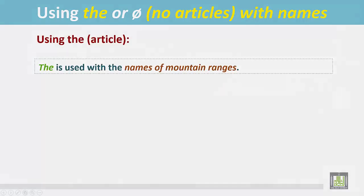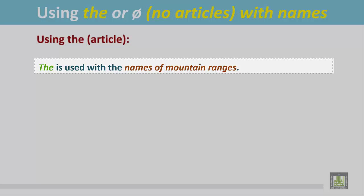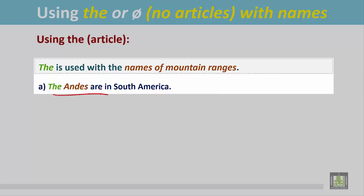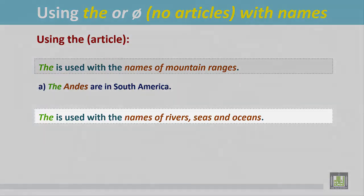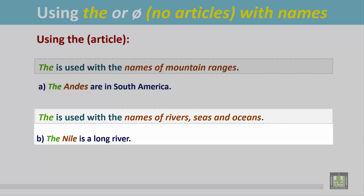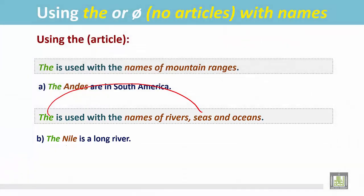Using 'the': the article 'the' is used with the names of mountain ranges. For example: 'The Andes are in South America.' 'The' is also used with the names of rivers, seas, and oceans. For example: 'The Nile is a long river' — there is the article 'the' before the name of the river. Similarly, 'the' is used before seas and oceans, like the Red Sea and the Atlantic Ocean.